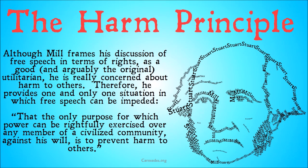Although Mill frames his discussion of free speech in terms of rights as a good, and as arguably the original utilitarian, he's really concerned about harm to others. Therefore, he provides one and only one situation in which free speech can be impeded: that the only purpose for which power can be rightfully exercised over any member of a civilized community against his will is to prevent harm to others.